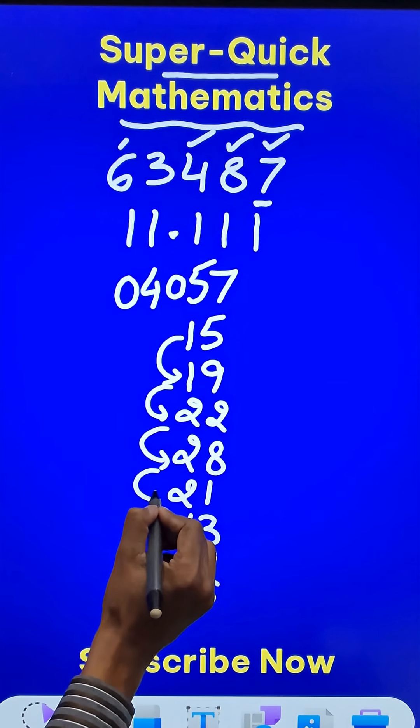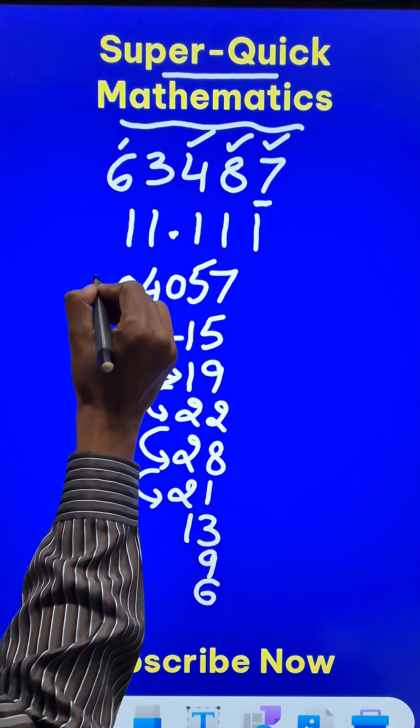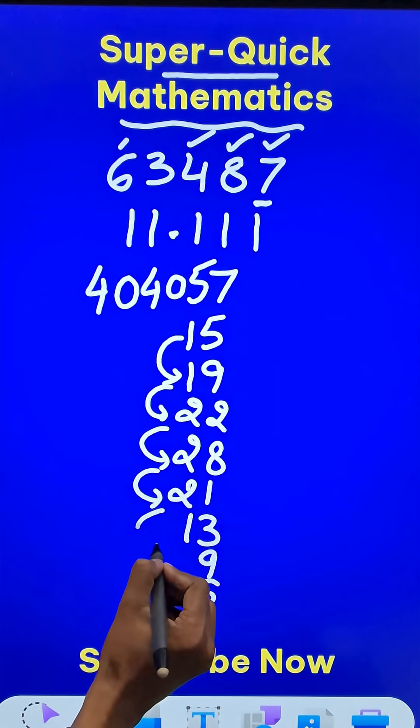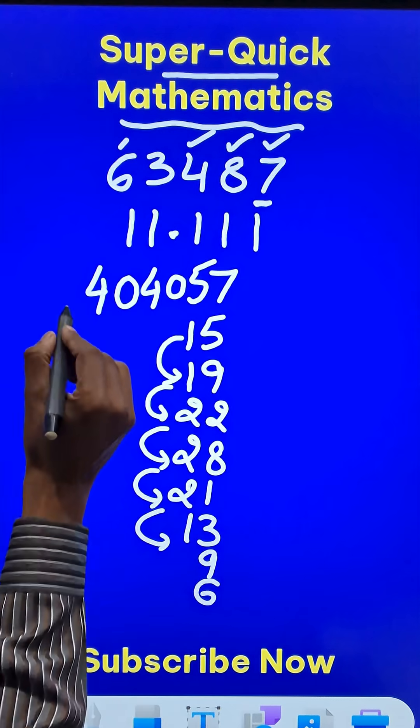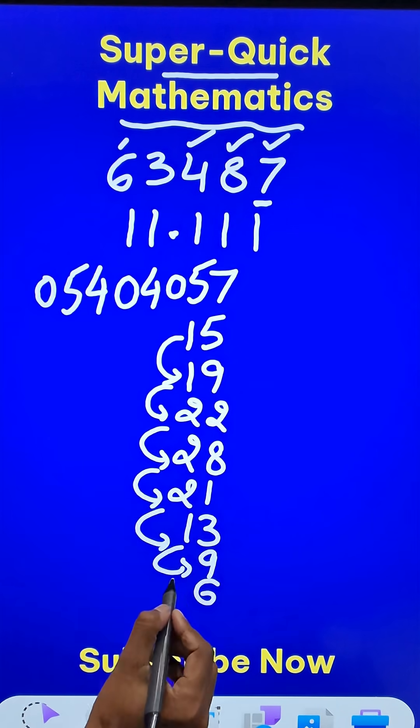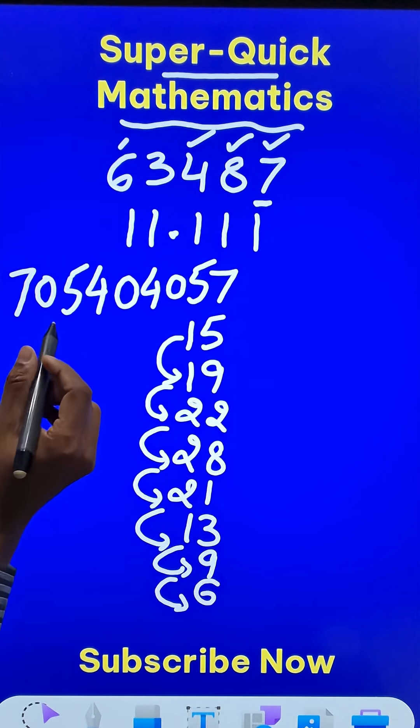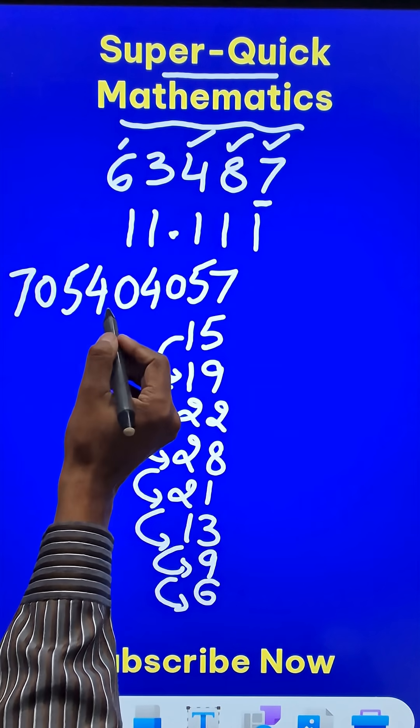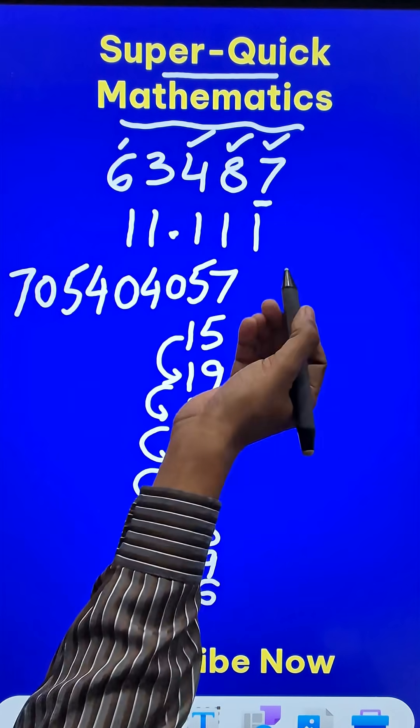3 gets carried forward, so 21 becomes 24 again, a 4. So this 2 gets carried forward. This becomes 15. So 5 and a 1 carry makes it 10. 10 means 0 and the 1 carry makes it 7. So you have 7, 0, 5, 4, 0, 4, 0, 5, 7.